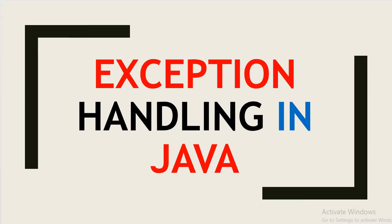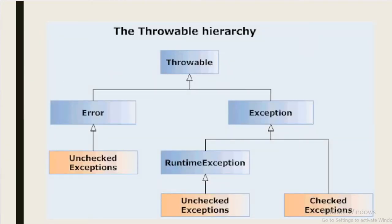Hello friends, welcome back to this channel. In our previous video we discussed what is an exception — a problem that abnormally terminates our application execution process. Today we will discuss how to handle exceptions in Java. It is the hierarchy of Throwable: the Throwable class has two subclasses — Error and Exception. Under Error, all classes are unchecked exceptions. Under Exception, there is RuntimeException, which is also unchecked, and Exception also contains multiple checked exceptions like IOException, EOFException, and ClassNotFoundException.